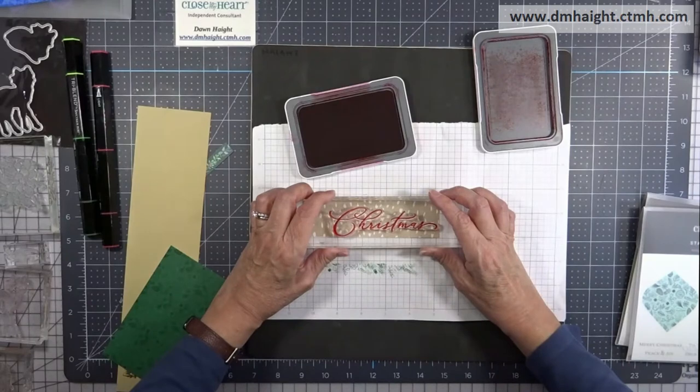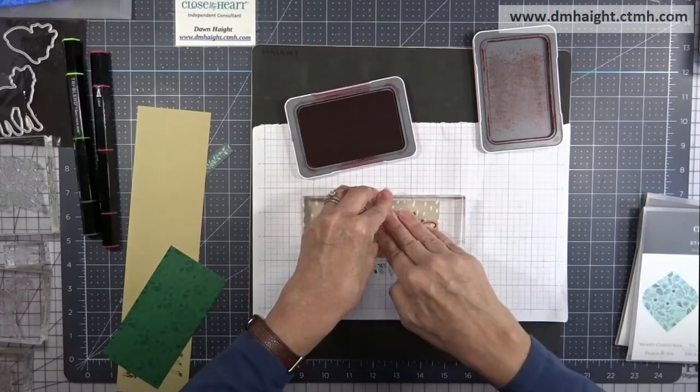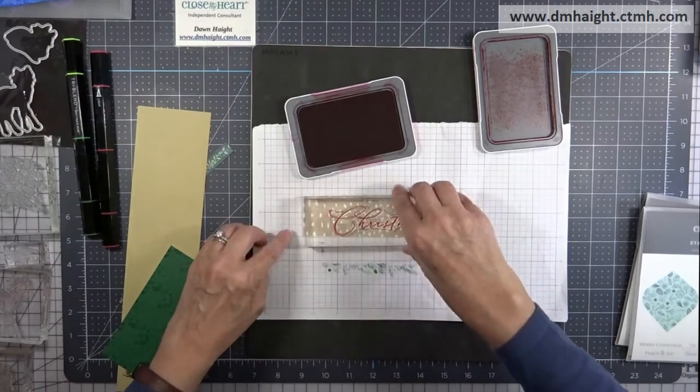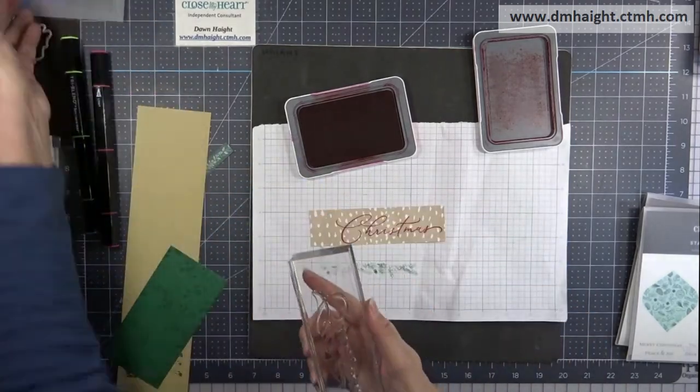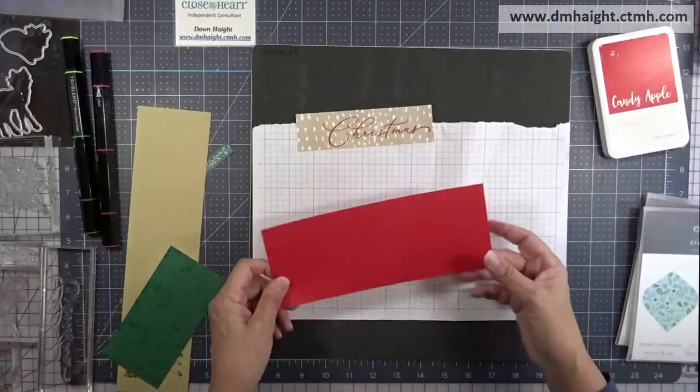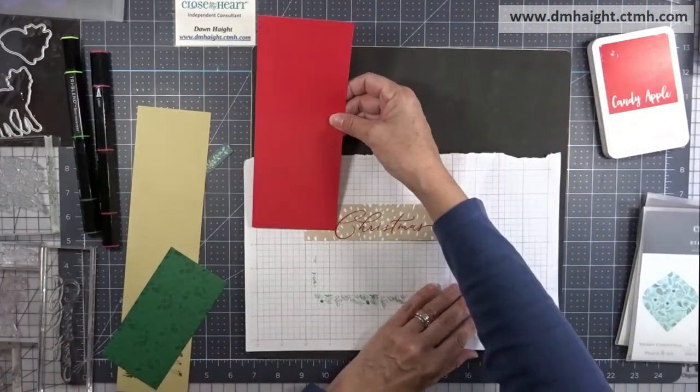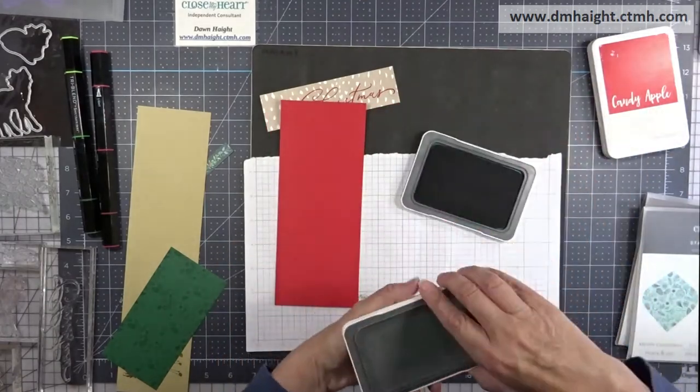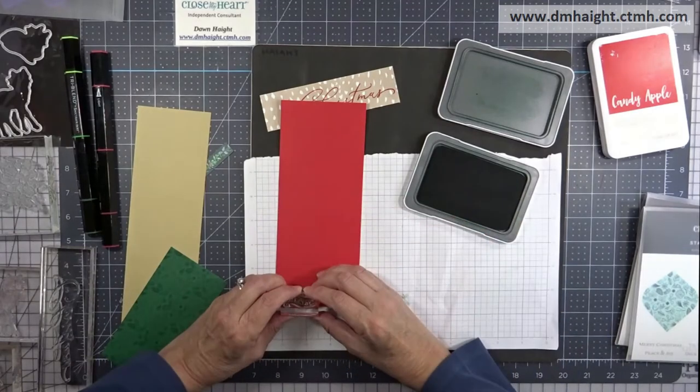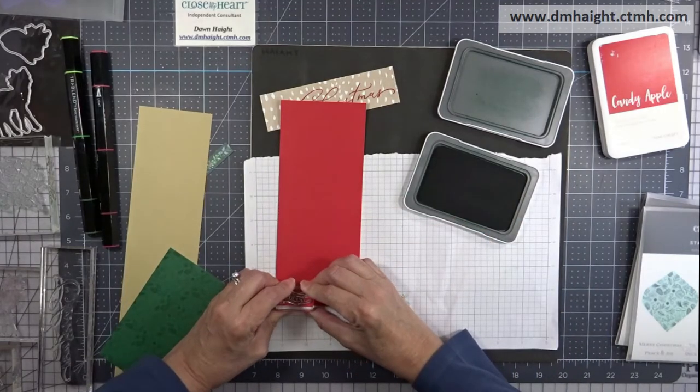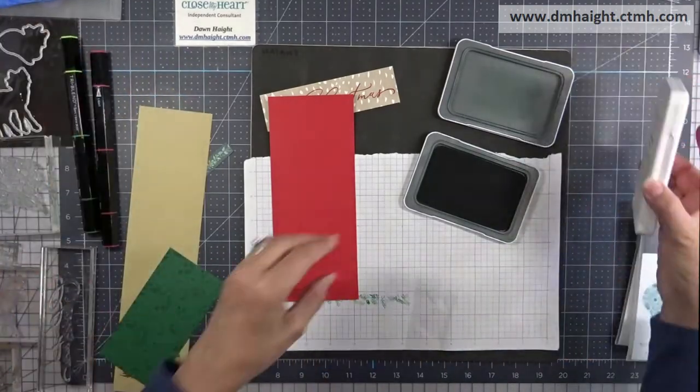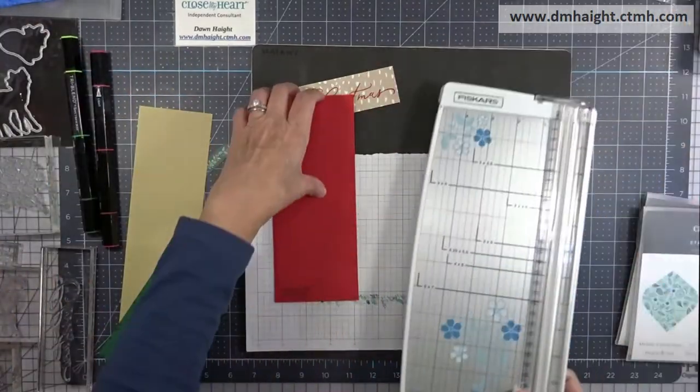So I'll ink that up in candy apple ink and stamp Christmas. And then because the word Mary is not going to quite fit, I'm going to create a banner and then I can overlap it using foam tape. So I'm going to use the dark side of candy apple and I'm going to stamp the word Mary in evergreen, and then I'll create a little banner to put up in that corner above the Christmas sentiment.